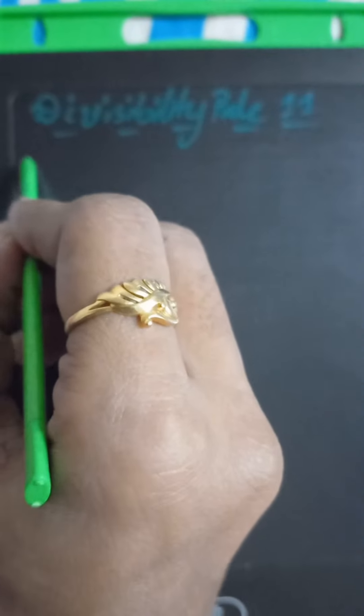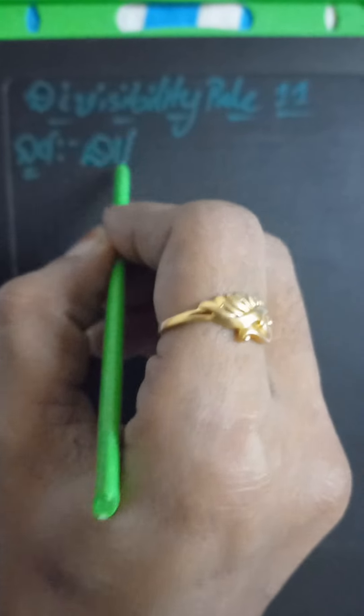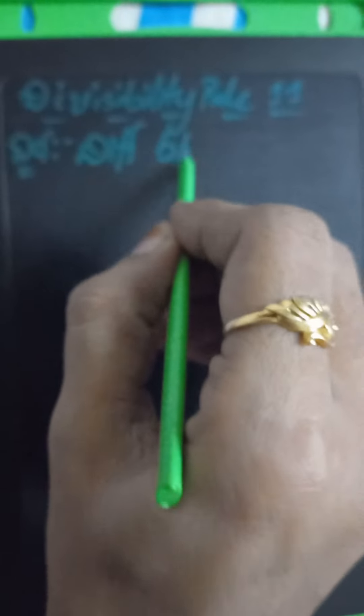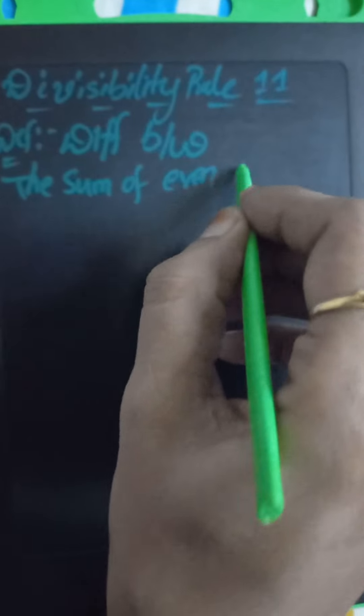Divisibility Rule 11 Definition: The difference between the sum of even places and